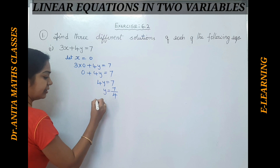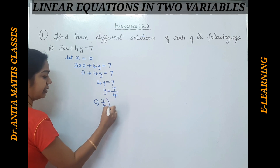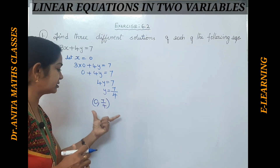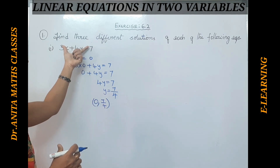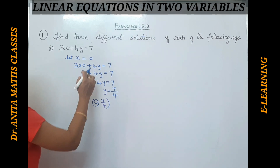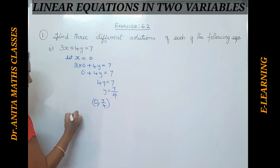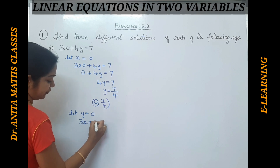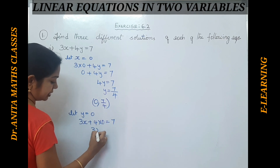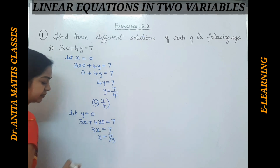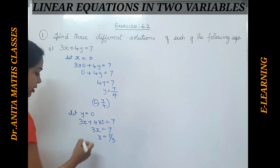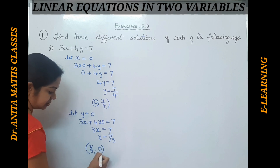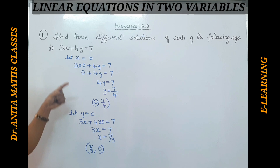For x equal to 0, we got y equal to 7 by 4. We write it as the ordered pair (0, 7/4) — this is called the solution set for this equation. Now let us find two more. Let y equal to 0, so 3x plus 4 into 0 equals 7, giving 3x equals 7, so x equals 7 upon 3. The ordered pair is (7/3, 0).